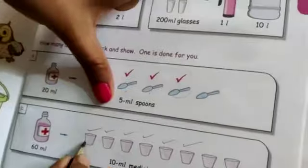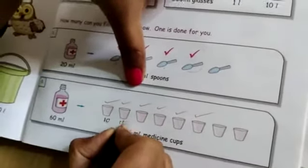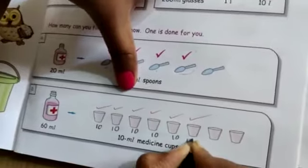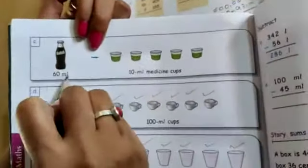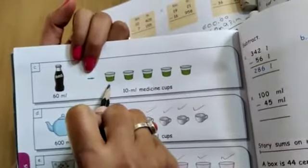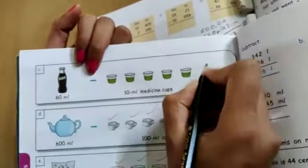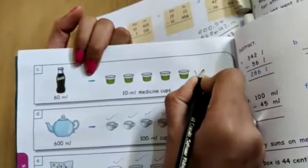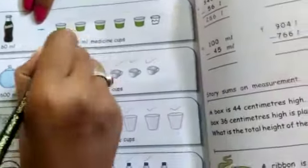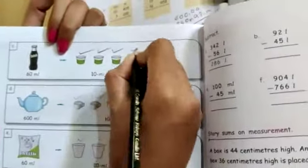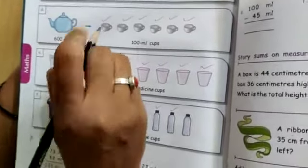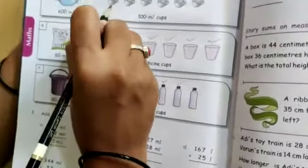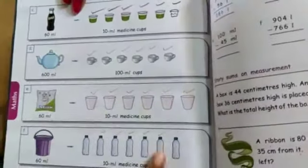Like that only, here 60 ml are there, 1 cup containing 10 ml. Then 10, 10, 10, 10, 10, 10, 60 means 6 cups we have to put here. Understood? Then here they had a print mistake. 60 ml they had asked, but 1 box is there. So you have to draw another box, then it becomes 60 ml. Put all boxes right mark. And also here 600 ml is there, 1 cup having 100 ml. Like that means 6 cups we have to tick.